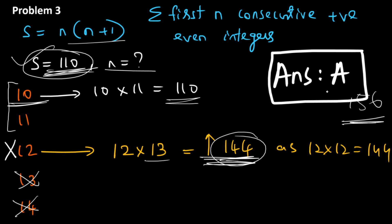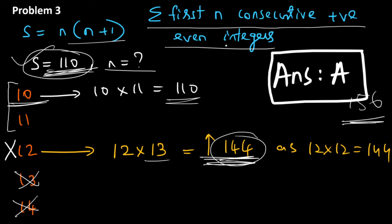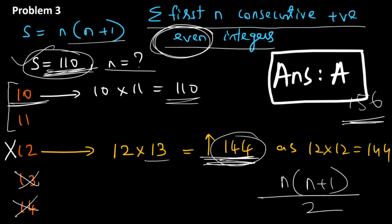Before we make a similar question, let me quickly remind you: this was the sum of the first n consecutive positive even integers. If you had to find the sum of the first n consecutive positive integers — leaving out 'even' — that would be given by n(n+1)/2.